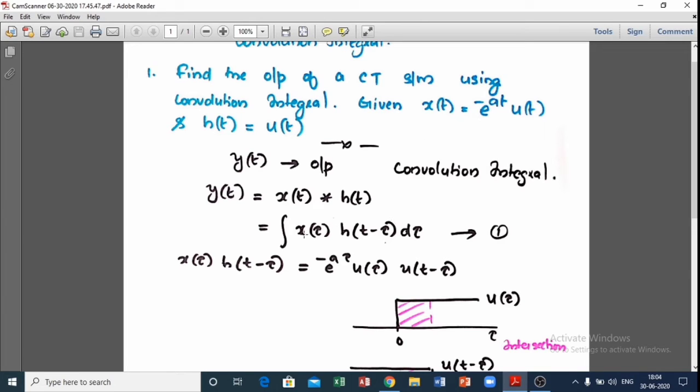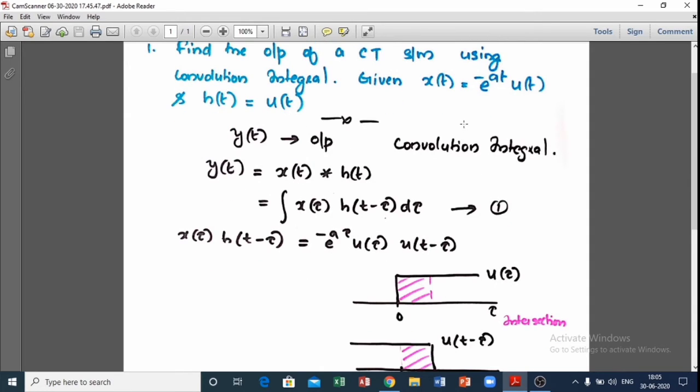We find out x(τ)h(t-τ) first. x(τ)h(t-τ) equals... The second term is h(t-τ). We already know h(t) and therefore h(t-τ) becomes u(t-τ).